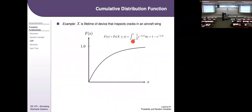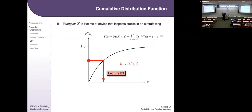For continuous random variables, the CDF is the integral from negative infinity to X. Here's an exponential CDF — it has zero density to the left of the axis, rises up, and eventually rounds out at one. If I invert the CDF, and you draw a random number between zero and one, the resulting output will be exponentially distributed. So I can draw from exponentials even though the computer only generates uniforms. That's one reason we see so many CDFs — a CDF is a gateway for drawing any random variable we want.